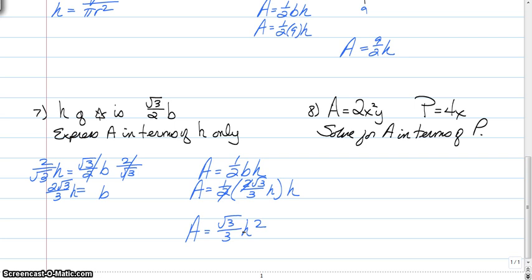Like I said, it's a little bit tricky. Now number 8 does not say in terms of p only. But p will need to be in your formula. So it says that A = 2x²y, p = 4x. What you need to do is solve for A in terms of p. Now I'll give you a little hint. Your final answer will have A equals something with p and y. So go ahead, pause the video. Try it on your own. And we'll go step by step as soon as you're ready.